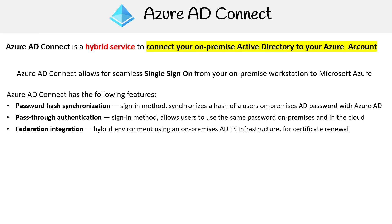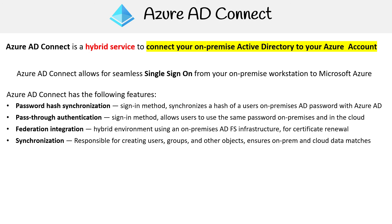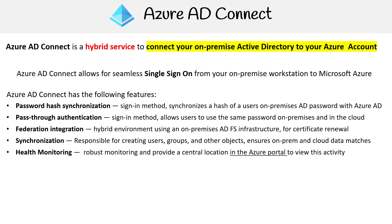Moving on, we have federation integration. This is a hybrid environment using an on-premise AD FS infrastructure for certificate renewal. Then you have synchronization, which is responsible for creating users, groups, and other objects, and ensures on-premise and cloud data matches — so you have the same AD objects both on-prem and in the cloud.